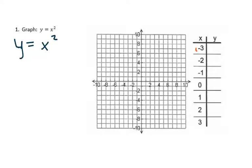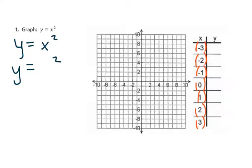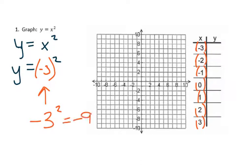Any time you are plugging in a value, especially these x's in the tables, you want to plug in something that actually has parentheses around it. Because otherwise, something like x squared may actually result in something different. For example, if you want negative 3 as a plugged-in value and you want to square it, this is how you need to enter it into the calculator. If you enter it without parentheses, you will get the incorrect answer of negative 9. But if you enter it with parentheses, you will get the correct answer, which is positive 9.